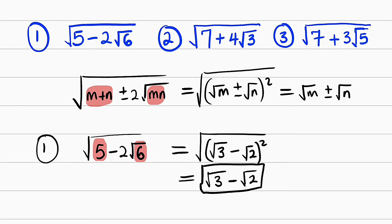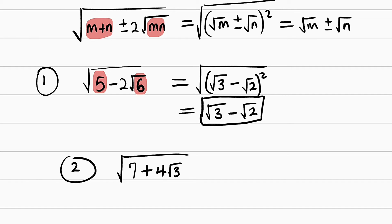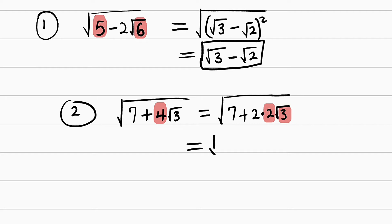Now let us take the next one. The second question is square root of 7 plus 4 root 3. We have square root of 7 plus 4 multiplied by root 3. You can see that this is 4, not 2. Therefore, we have to write it in terms of 2, and 4 can be written as 2 multiplied by 2. So this is equal to square root of 7 plus 2 multiplied by 2 root 3. Now we may take this 2 inside the square root, but before you do that, you have to square 2. Square of 2 is 4, so we multiply 4 by 3. This is equal to square root of 7 plus 2 multiplied by root 12, because 4 times 3 is 12.